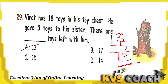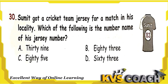The next question: Sumit got a cricket team jersey for a match in his locality. Which of the following is the number name of the jersey? Looking at the jersey, the number is 83. Option B is the right answer.